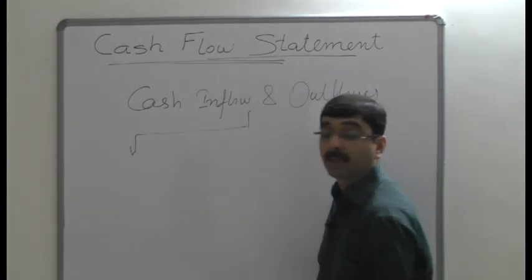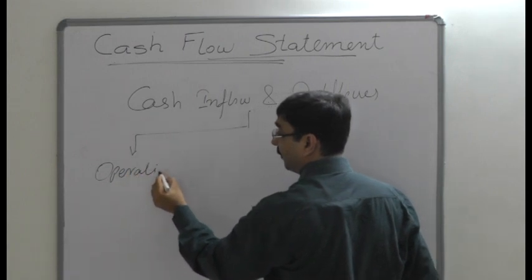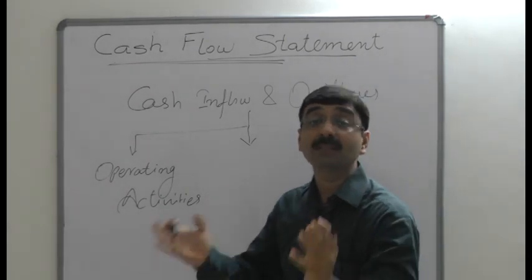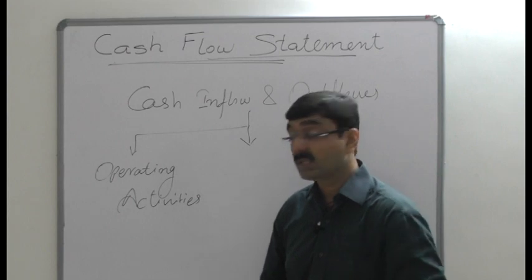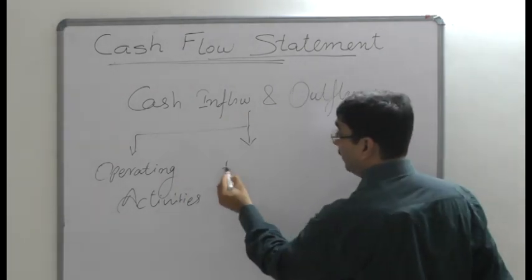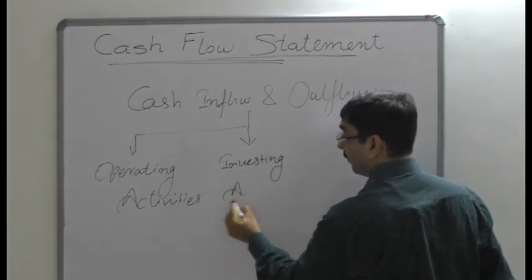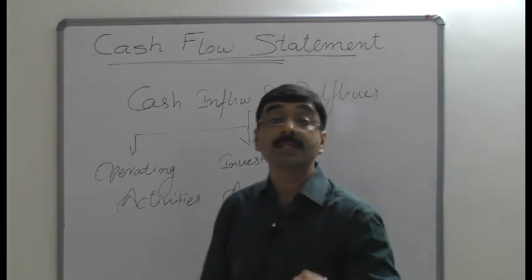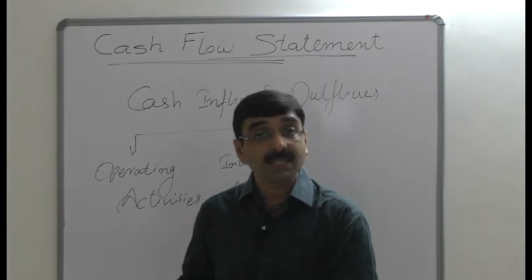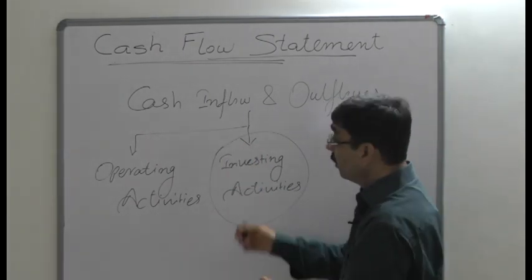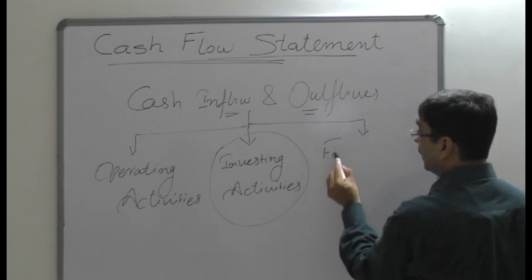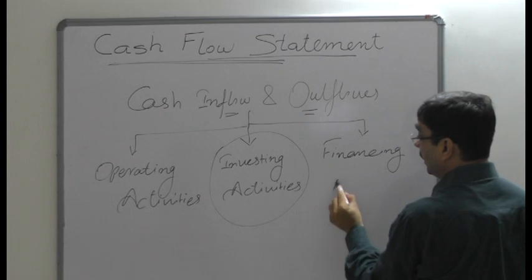The three categories are: first, operating activities — all operational transactions related to the day-to-day business are considered here, identifying changes in cash inflows. Second, investing activities — any changes in fixed assets and investments, whether purchase or sale of fixed assets, or purchase or sale of long-term investments, are recorded here to identify cash inflows and outflows.